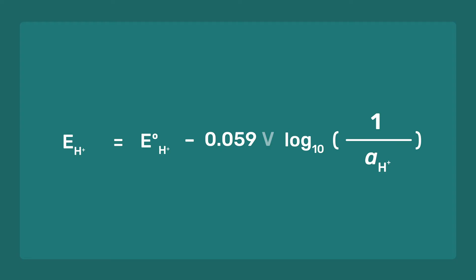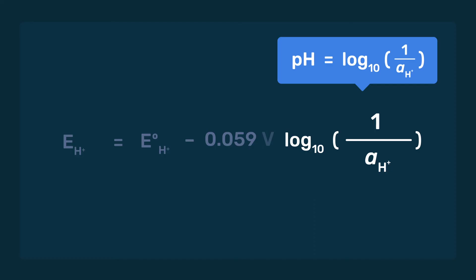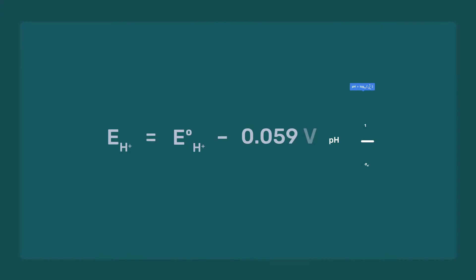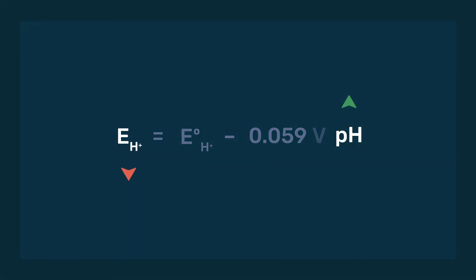Specifically, our half-cell potential ends up with a dependence on pH. Increasing the pH decreases the half-cell potential, and vice versa.